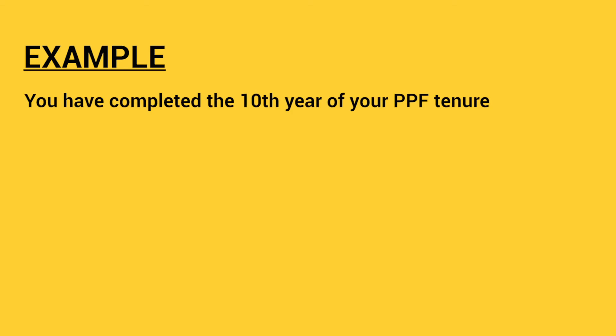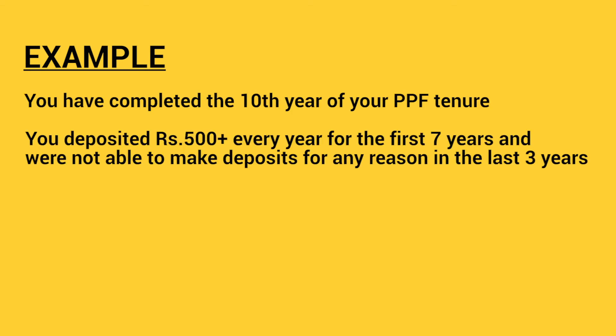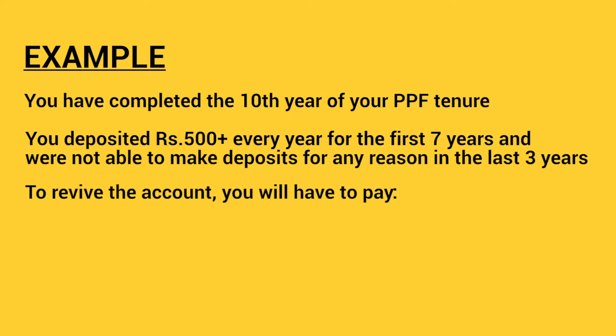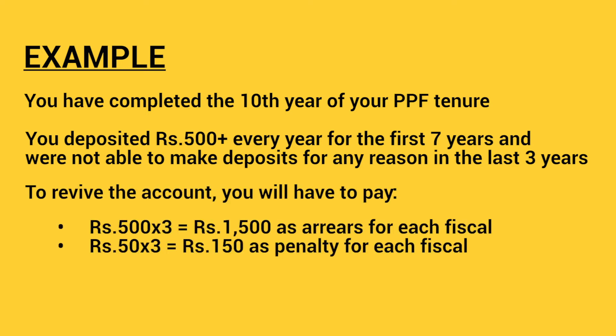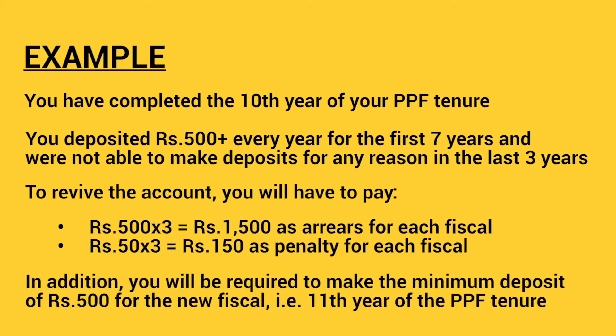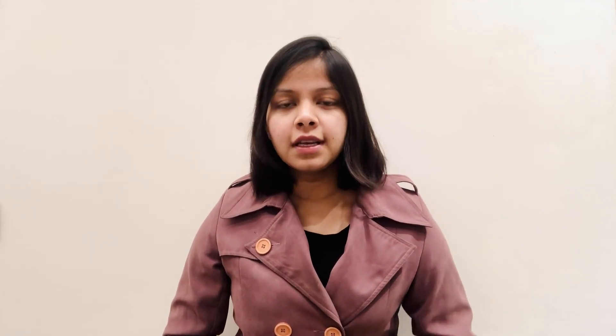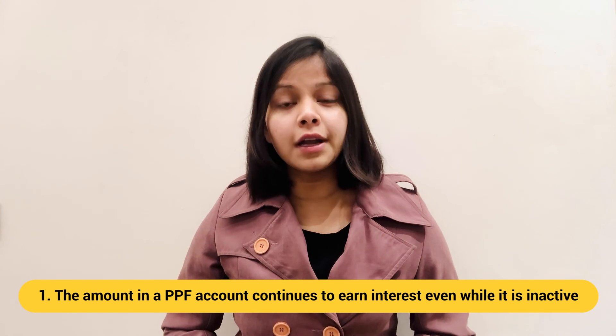For example, suppose you have completed the 10th year of a PPF tenure. You deposited rupees 500 or more every year for the first seven years but were unable to make deposits for the last three years. To revive the account, you will have to pay rupees 1,500 as arrears for each of those fiscal years, plus rupees 150 as penalty for each fiscal year. In addition, you will be required to make the minimum deposit of rupees 500 for the new fiscal year, that is, the 11th year of your PPF tenure.